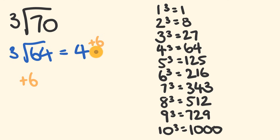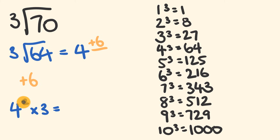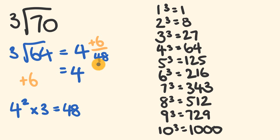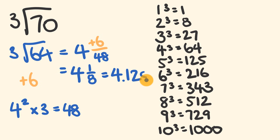That 6 is the second part of our answer. For the third part, we take that 4, square it, then multiply by 3: 4 squared is 16, multiplied by 3 equals 48. So we have 4 and 6 over 48. Simplifying — dividing 6 into numerator and denominator — gives 1 eighth, which as a decimal is 4.125. The actual cube root of 70 is 4.121, so we're pretty close.